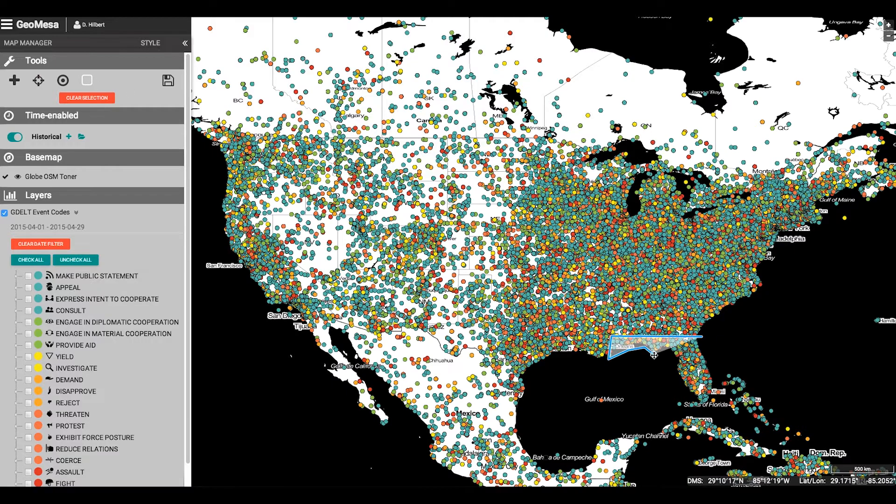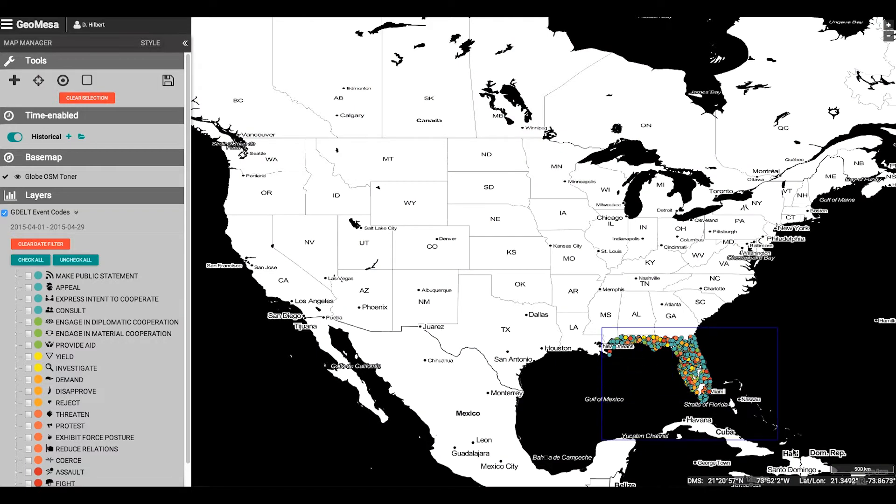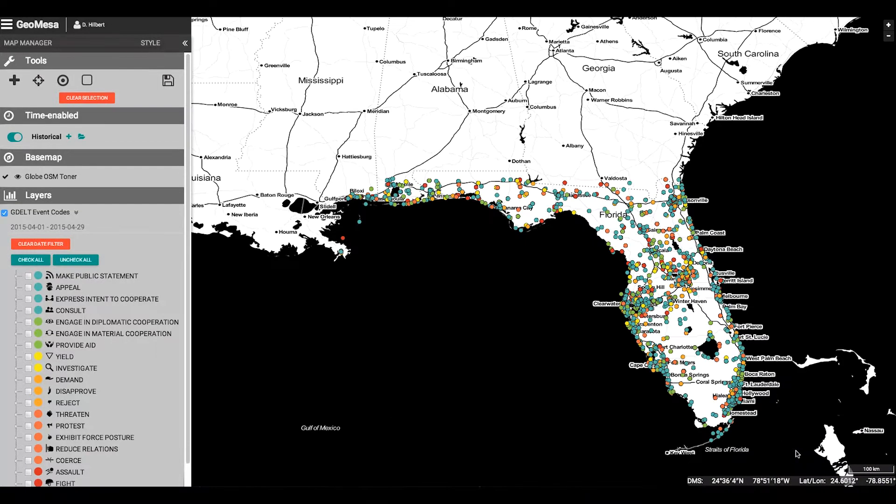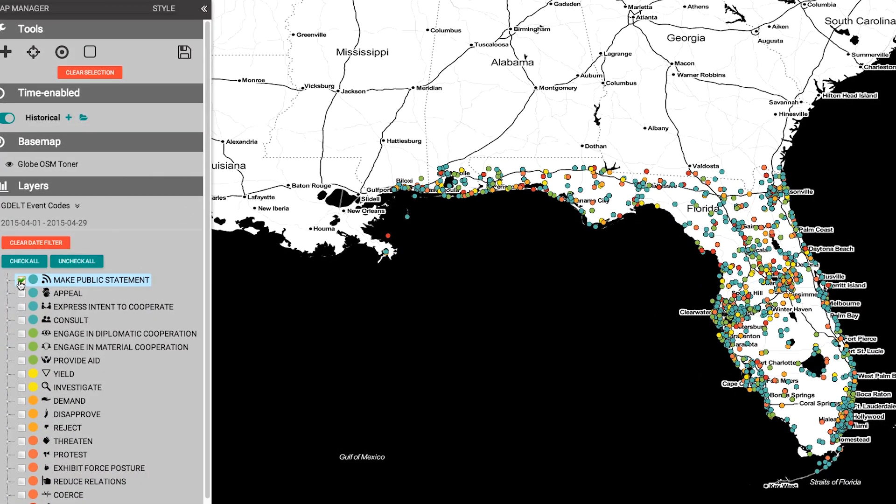With GeoMESA, your users will easily query from billions to hundreds of billions of features, drill down to the area they are interested in, and then filter by the relevant attributes.